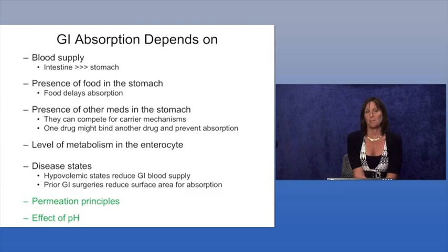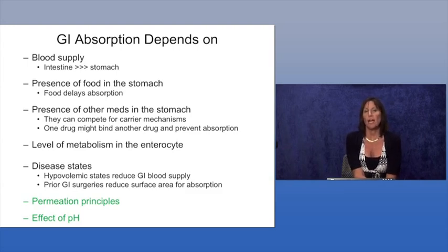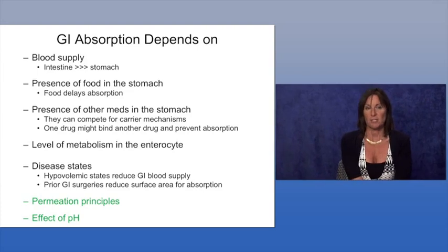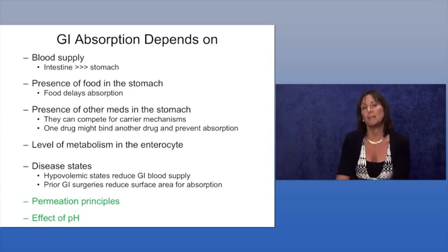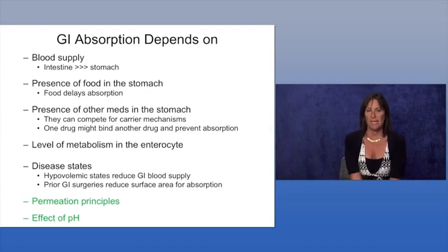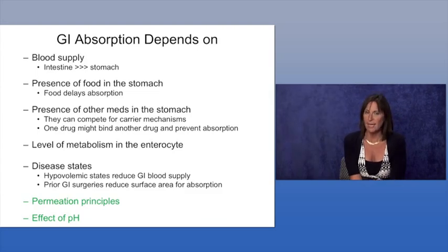A fourth concept is how much metabolism — breakdown of a drug — occurs in the cells lining the GI tract, referred to as enterocytes or GI endothelial cells. Metabolism within the enterocyte can reduce the amount of drug that ends up being absorbed into the portal circulation. The degree of enterocyte metabolism will determine how much drug actually gets from the GI tract into the systemic circulation.